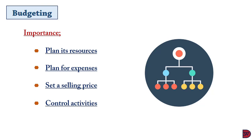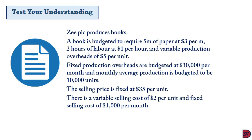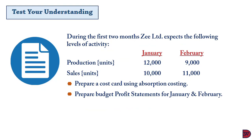Let's test understanding. Z PLC produces books. The book is budgeted to require five meters of paper at three dollars per meter, two hours of labor at one dollar per hour, and variable production overheads of five dollars per unit. Fixed production overheads are budgeted at thirty thousand dollars per month, and monthly average production is budgeted at ten thousand units. The selling price is fixed at thirty-five dollars per unit, with a variable selling cost of two dollars per unit and fixed selling cost of one thousand dollars per month. In the first two months, production is twelve thousand units in January and nine thousand in February; sales are ten thousand in January and eleven thousand in February. We are to prepare the cost card using absorption costing and the budgeted profit statement for January and February.